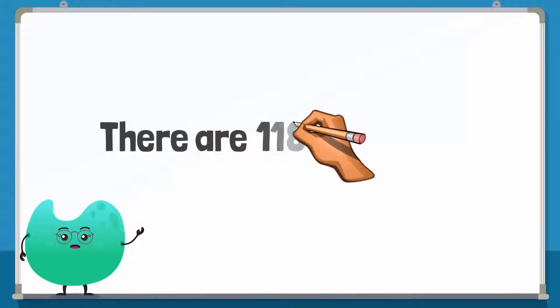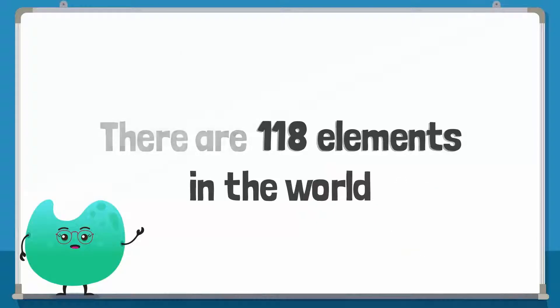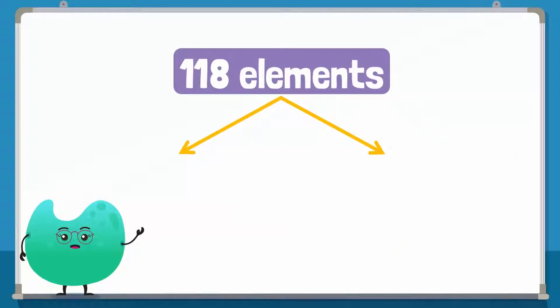We know that there are 118 elements in the world. These elements can be divided into two broad groups: metals and non-metals.